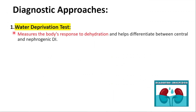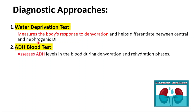To diagnose diabetes insipidus, we can use the water deprivation test, which measures the body's response to dehydration and helps differentiate between central and nephrogenic types. ADH blood tests can assess ADH levels during dehydration and rehydration phases. MRI and CT can also be used to identify structural abnormalities.